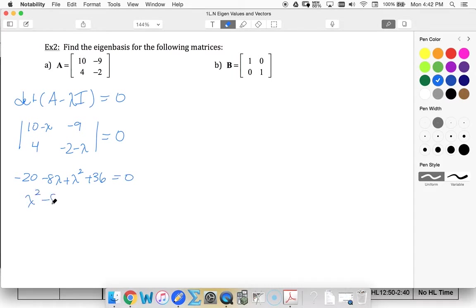So lambda squared minus 8 lambda plus 16 equals lambda minus 4 squared. So I only have one eigenvalue this time. My eigenvalue is repeated, it's 4.